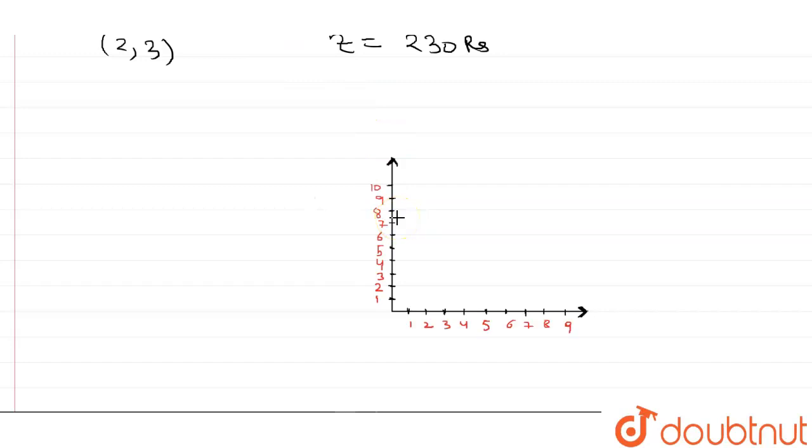So our aim is to find the maximize. This is the first equation which is 3x plus y equal to 9. Now the second equation which is x plus 2y is equal to 8.